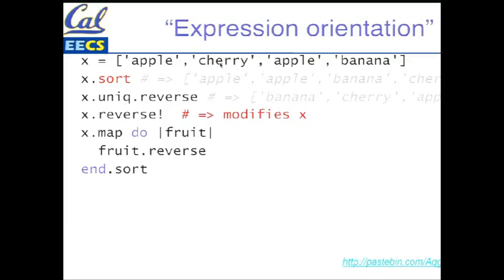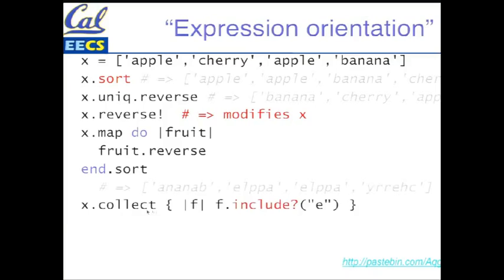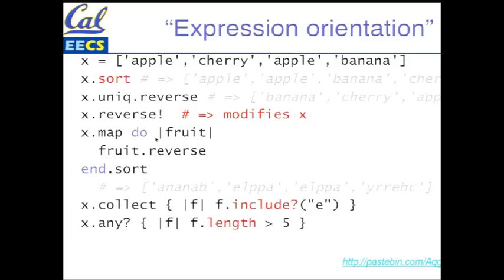We can collect, meaning select out the elements that match a criterion. We could say, for every element in X, manage your own traversal, hand me elements one at a time, and I'll just keep the ones that include the letter E. I'll get back a new collection. If you took the classic version of 61A with Scheme, this is a pretty familiar idiom. And remember when I said earlier that even though things have classes, it's all about what you respond to? That's the reason reverse works on individual strings inside the array as well as on the array itself. The array class defines a reverse method that reverses array elements, and the string class defines reverse to reverse the characters in a string. I can also ask whether any of the elements of X have a length greater than five and just get back true or false.